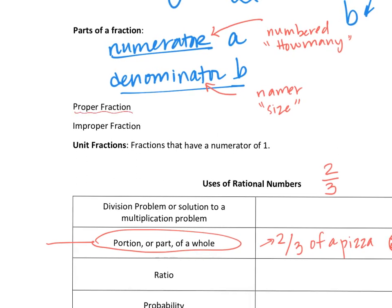Before we look at other representations, there are two more terms: a proper fraction, where the numerator is less than the denominator, and an improper fraction, where the numerator is bigger than the denominator. We also have unit fractions — fractions with a numerator of one — like one-half, one-third, and one-fourth.